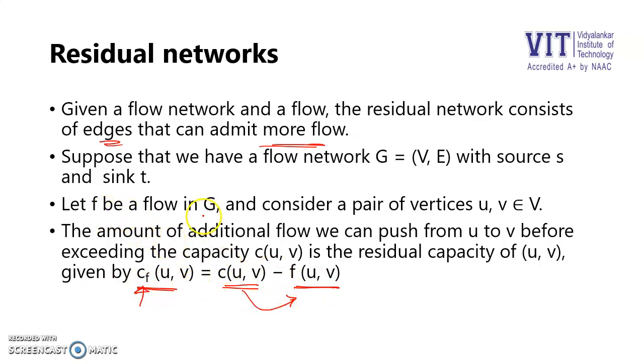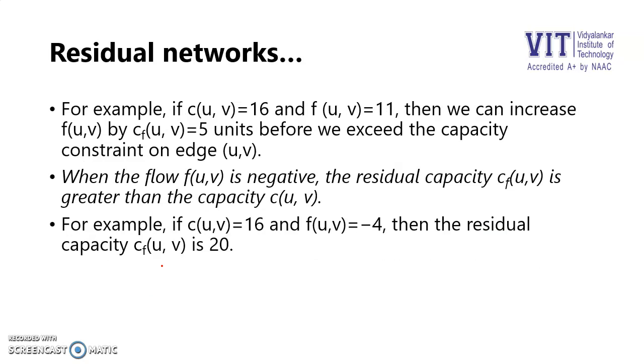Let f be the flow in G and consider a pair of vertices (u,v) that belongs to the vertex pair. The amount of additional flow that we can push from U to V before we exceed the capacity of the vertex—what we call the residual capacity, denoted as c_f—is the additional flow that we can pass without exceeding it.